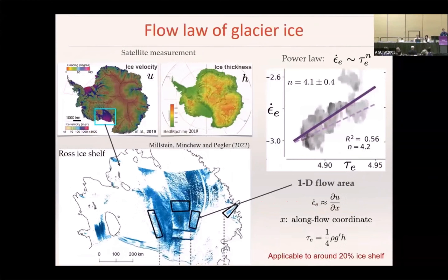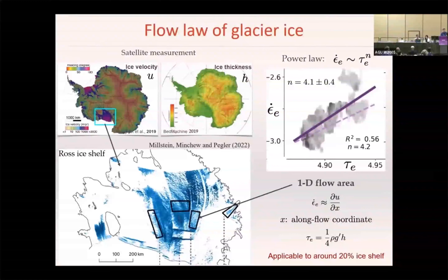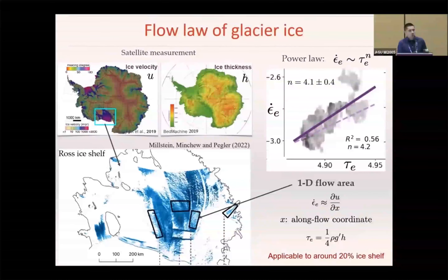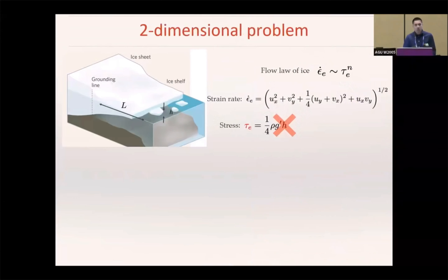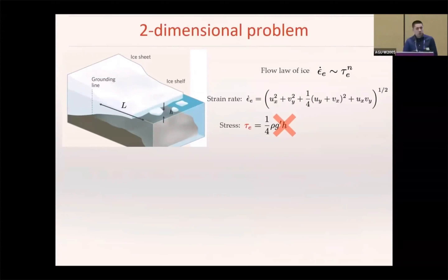Using remote sensing data, prior studies based on boundary theories claim that the power law exponent of ice shelves is close to 4 instead of 3. However, such methods can only be applied to the 1D flow regime, which is limited on the ice shelf. For 2D ice flow, the rheology becomes hard to examine because the effective stress can no longer be determined explicitly.